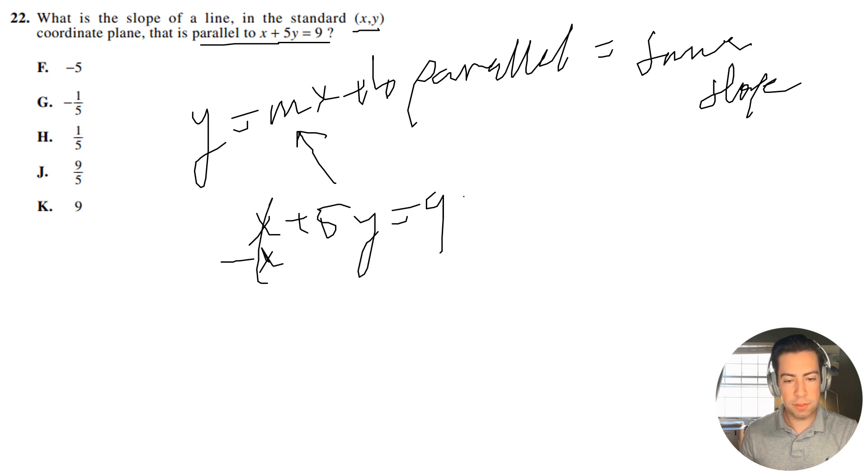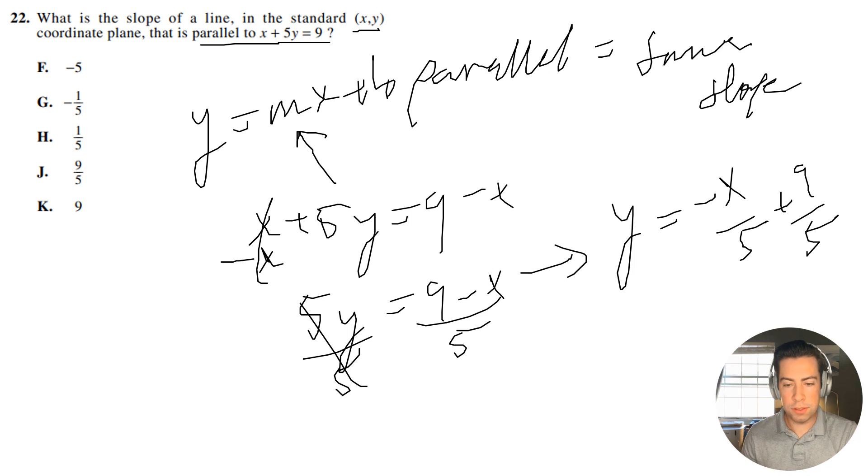What I'm going to do is subtract x from both sides. I have 5y equals 9 minus x, and then I will divide both sides by 5. Let me break this down. We're going to have y equals negative x over 5 plus 9 over 5. This format now matches this format right here.